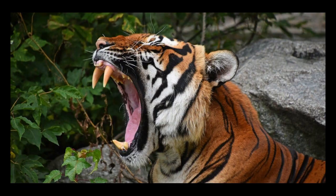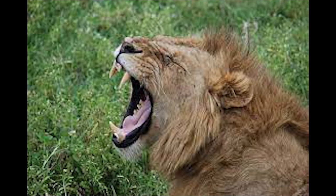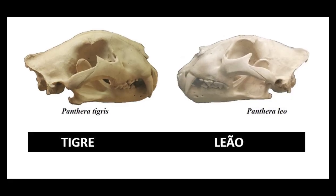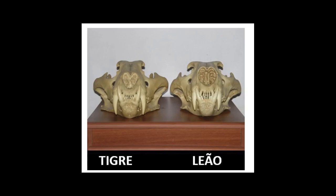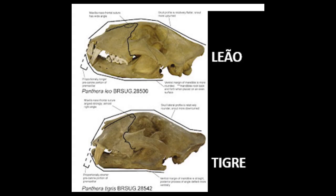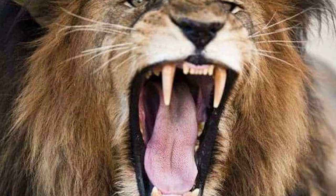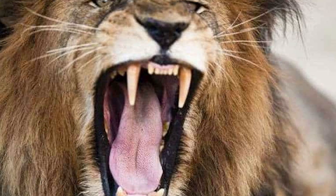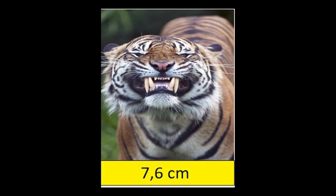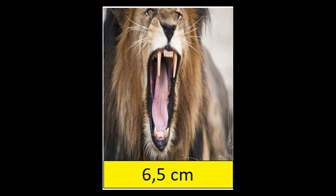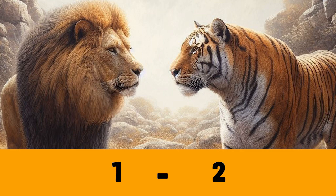Caninos. Ambos apresentam caninos grandes e afiados. Comparando os crânios, pode-se observar que os tigres têm caninos maiores que os leões. É mencionado que o tigre tem o maior canino entre os carnívoros terrestres, cuja média é 7,6 centímetros de comprimento, enquanto o comprimento dos caninos dos leões é em média 6,5 centímetros. Portanto, nesse item, ponto para o tigre.